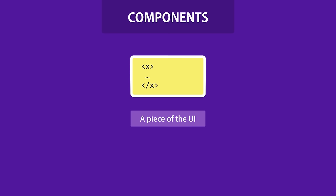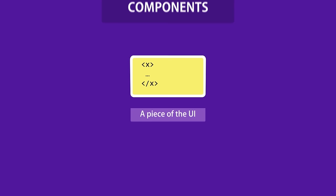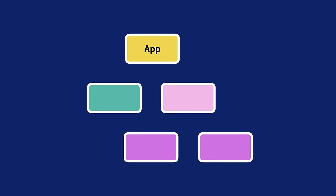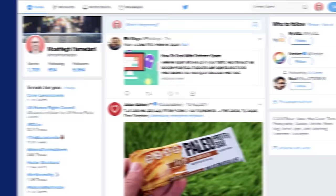At the heart of all React applications are components. A component is essentially a piece of the user interface. When building applications with React, we build a bunch of independent, isolated, and reusable components and then compose them to build complex user interfaces. Every React application has at least one component — the root component — which represents the entire application. Every React application is essentially a tree of components.